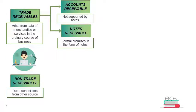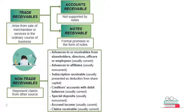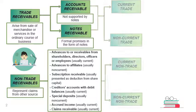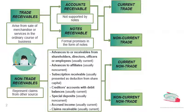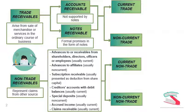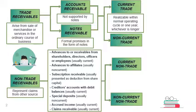Examples of non-trade receivables are as follows. Take note of the usual classification as to current or non-current. Trade and non-trade receivables are classified either as current or non-current. The classification criteria, however, are different for trade and non-trade receivables. For trade receivables to be considered current, they must be realizable within the normal operating cycle or one year, whichever is longer.